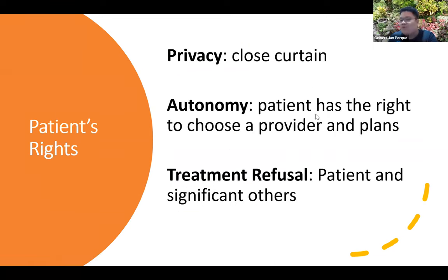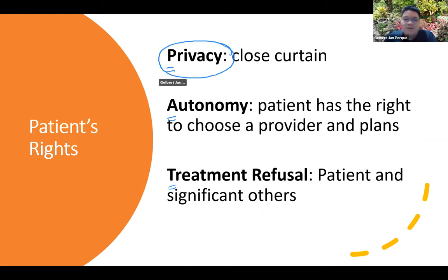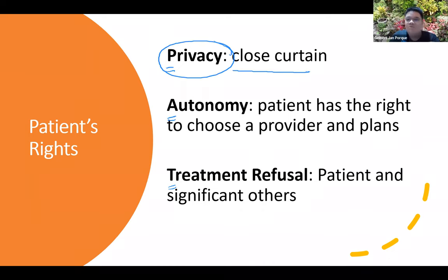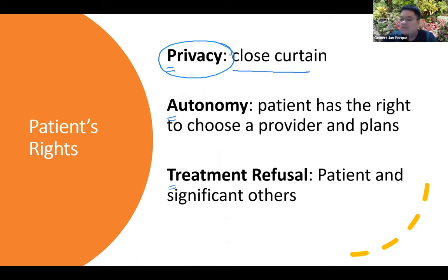This is a summary using the acronym PATIENTS. 'P' stands for Privacy, 'A' for Autonomy, 'T' for Treatment Refusal, and so on. For privacy, the simple thing taught to us is to close the curtain. In the ER, be careful when talking about sensitive topics because patients are often separated only by curtains — conversations about sexual practices or domestic violence situations should be kept to a minimum and discussed in a private room.